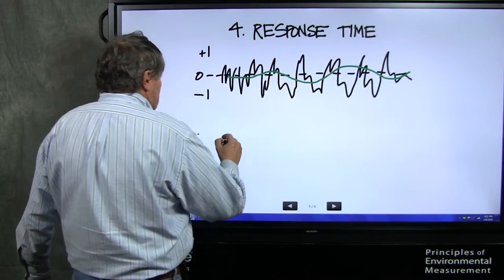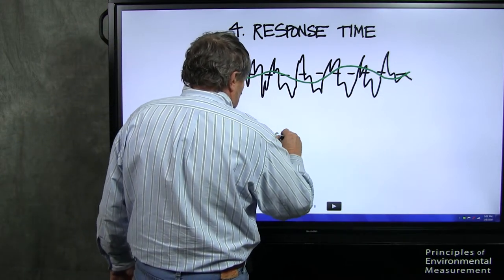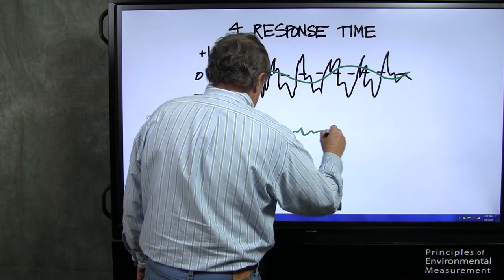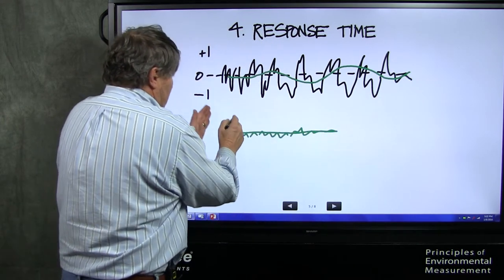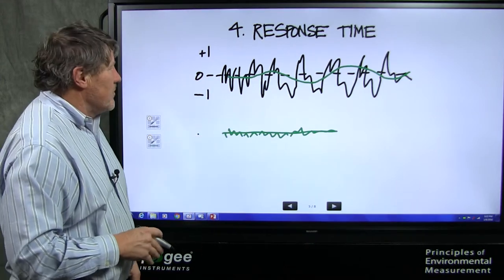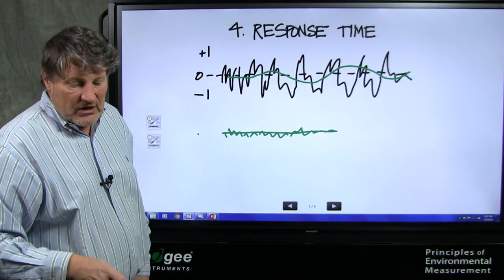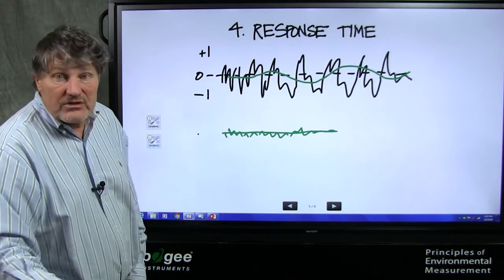Apogee sensors have much smaller noise over time, so they don't need to do a running average. It can make measurements over short time intervals, much faster response time. For many applications, that's critical.